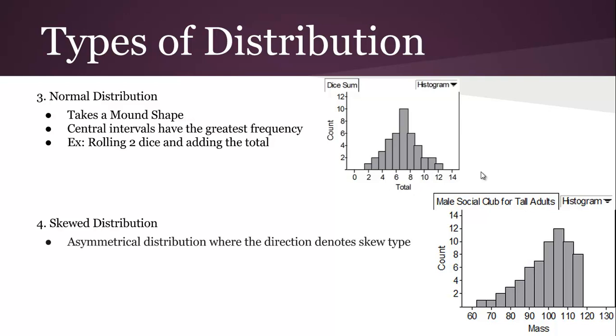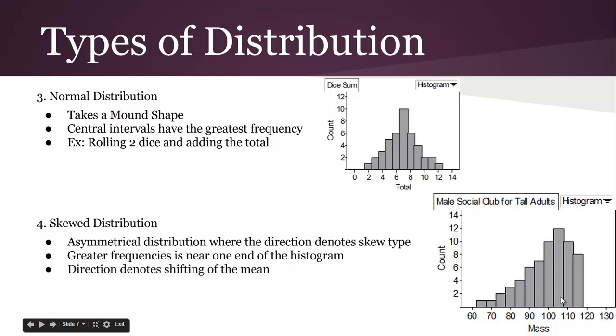A skewed distribution, so it's asymmetrical. And the direction tells you the skew type. So you can imagine this is an arrow pointing left, that's what we call left skewed. Greater frequencies are near one end of the histogram. So greater frequencies are up here, and the average will actually be pulled down by these guys. So the median will be somewhere in here, the average will be pulled down, and this is actually going to be left skewed because the tail is on the left.